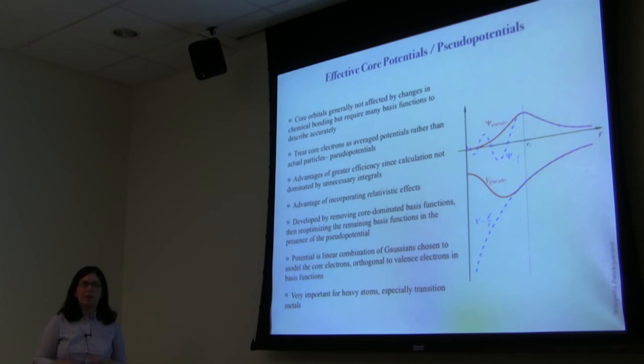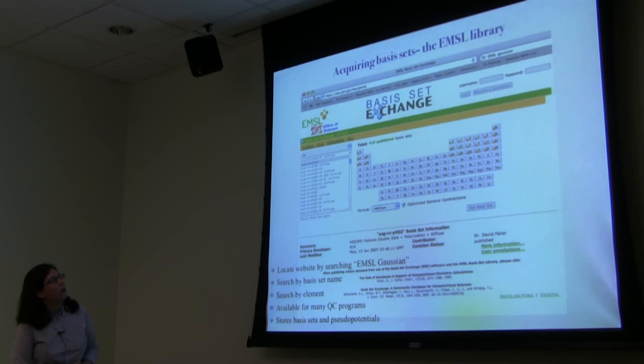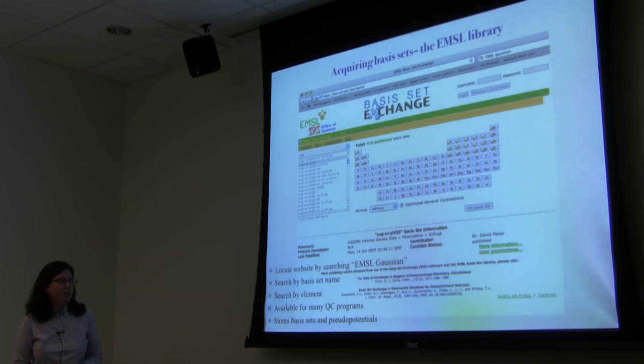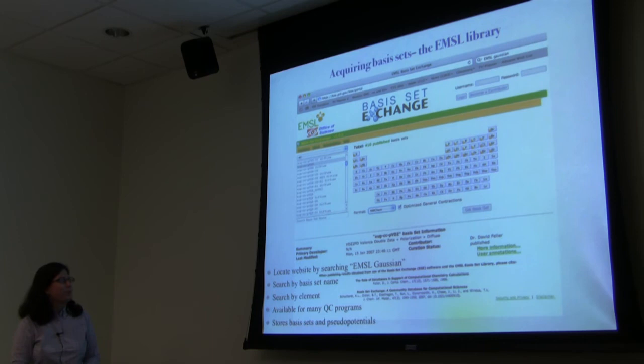Pseudopotentials are very important for heavy atoms, especially transition metals, and even more so for lanthanides and actinides. To get a basis set, hopefully the ones you need are already available in your quantum chemistry program. If not, EMSL is the place to go — search by basis set name and you can get both basis sets and pseudopotentials there.